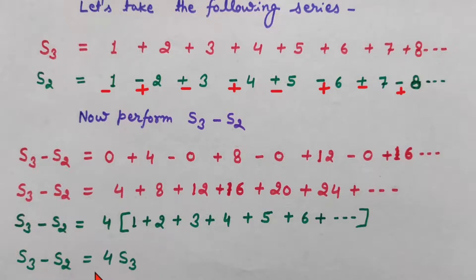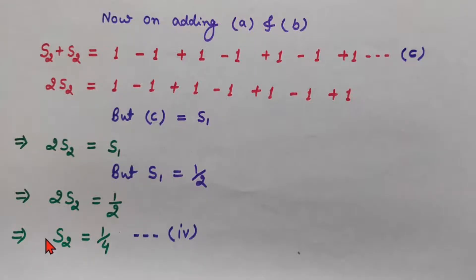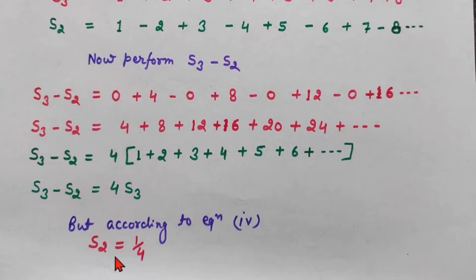And S3 minus S2 will be 4 times of this series. 1 plus 2, this is S3 series actually. So I have replaced it with S3. But according to equation number 4, S2 was 1 by 4. So we will replace S2 by 1 by 4. So S3 minus 1 by 4 equals to 4 times of S3.